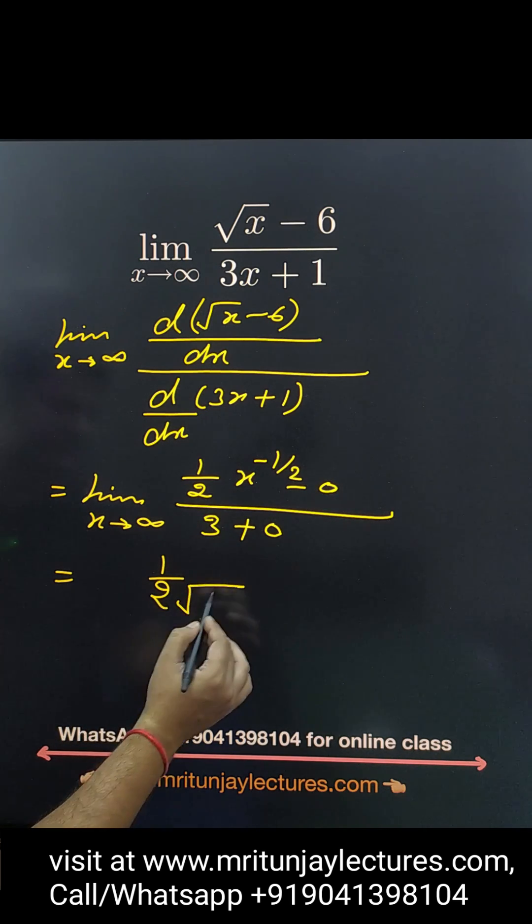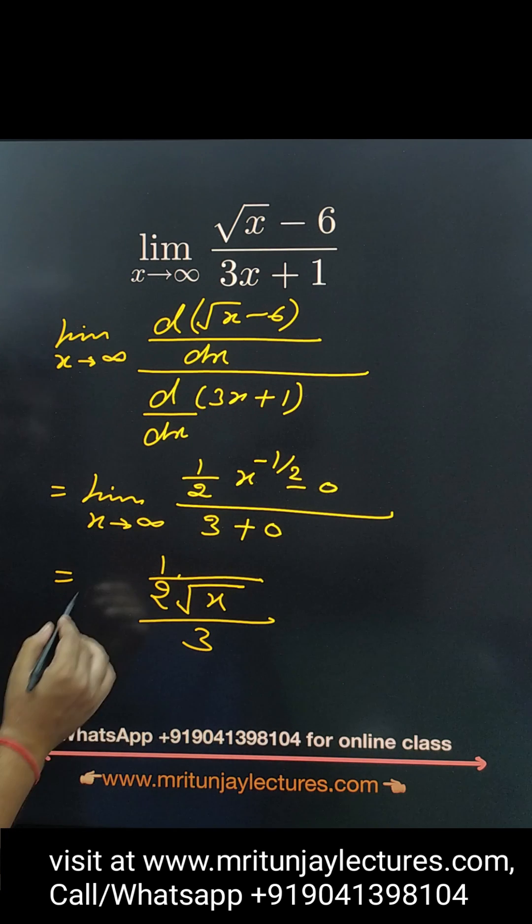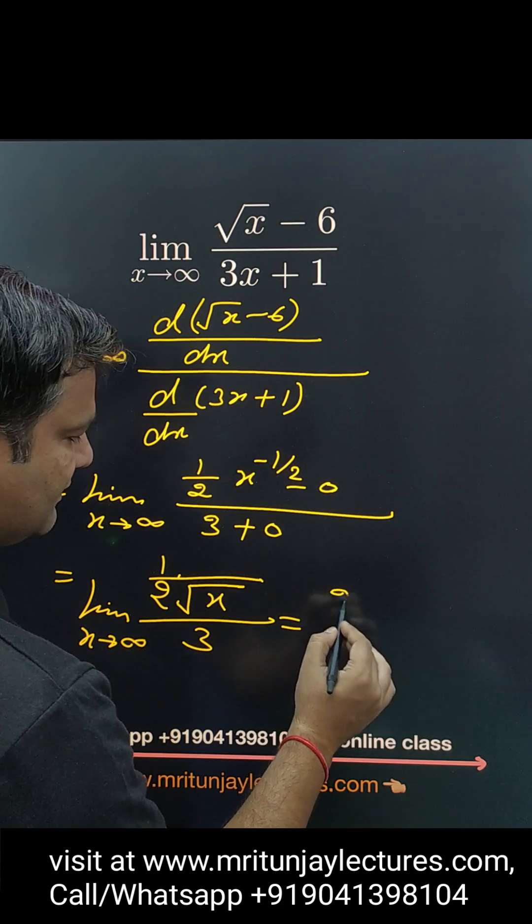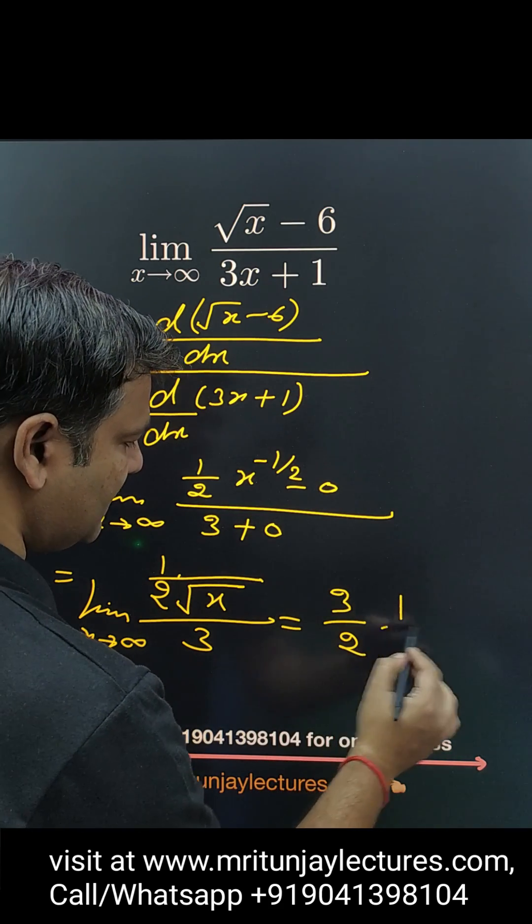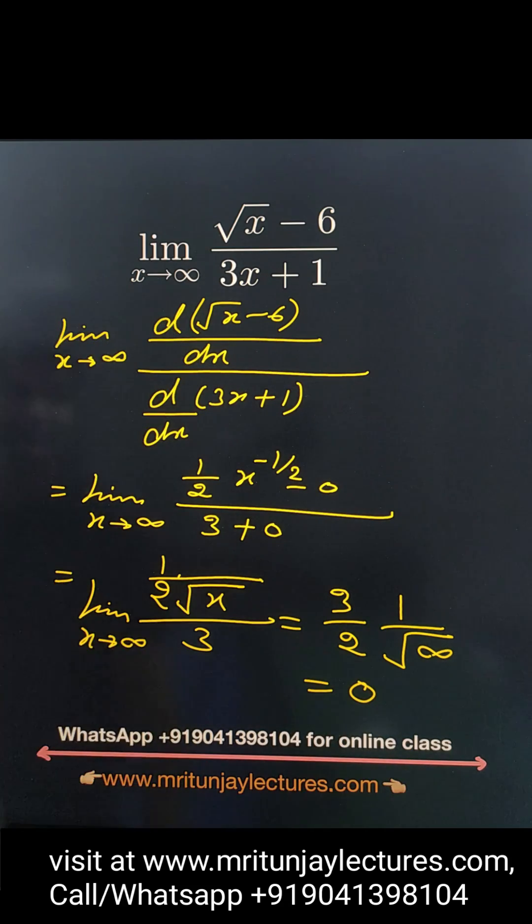Divided by 3. Limit x tends to infinity. If we put here then 3 by 2, 1 by under root infinity, so that value is 0. That is the right answer. Make it.